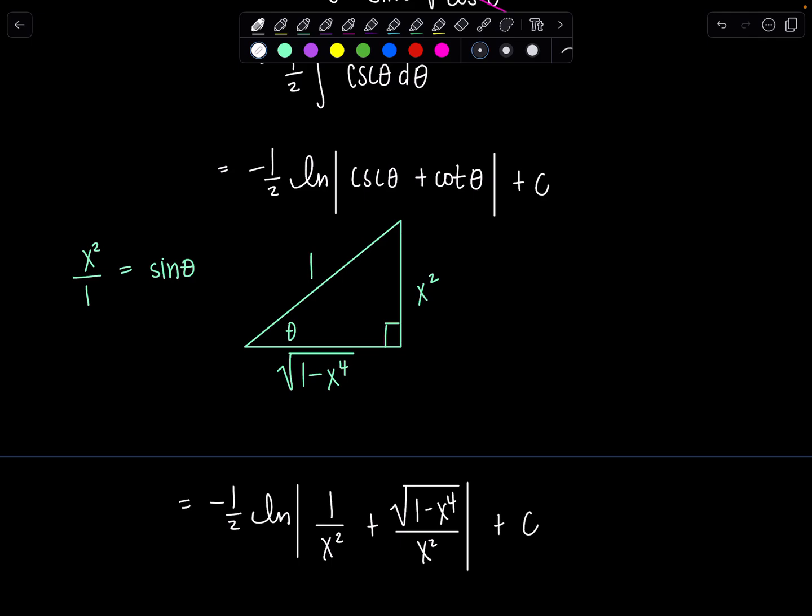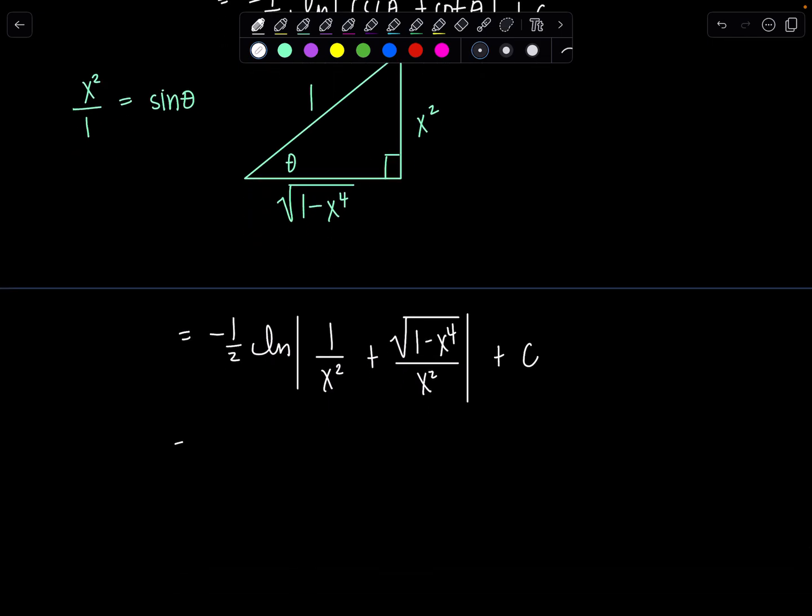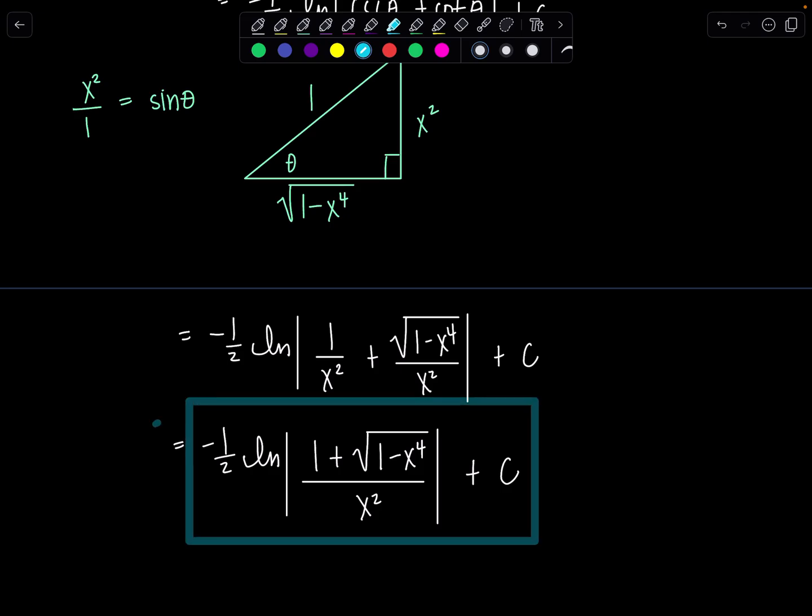And then the only thing I would do is just put everything over the same denominator that's inside the absolute value bars, and I'd write this as negative 1 half ln, 1 plus rad 1 minus x to the 4th over x squared plus c. If it bothers you that it's negative, you could move that minus sign to the exponent here and take the reciprocal, but then I don't know how I feel about having 1 plus rad 1 minus x to the 4th in the denominator. So I say let's just stop, but if you want to keep playing with it and cleaning it up, feel free. Let me know if it gets much nicer.